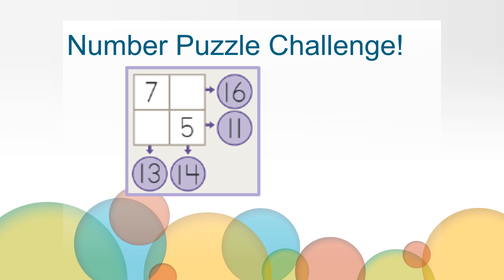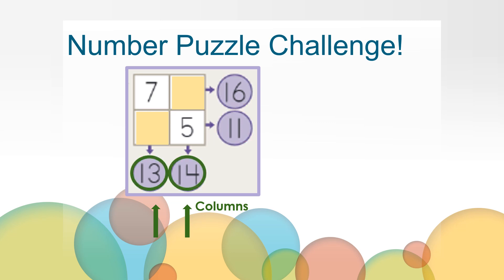Looks like you are ready for a number puzzle challenge. Here is one you can copy and try at home to give you practice with the addition and subtraction facts we have been learning. To solve the puzzle, you need to figure out the missing parts that make the facts in the rows true or equal to the total or whole in the circles. The numbers must also make the facts in the columns true or equal to the totals in those circles at the bottom. We will pause here so you can copy this on your paper and try it later at home.